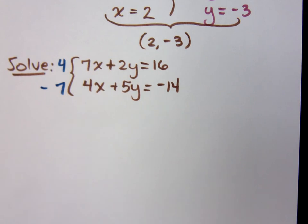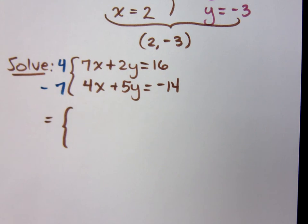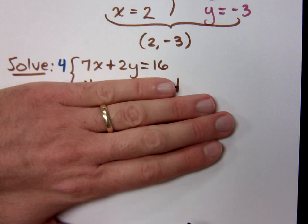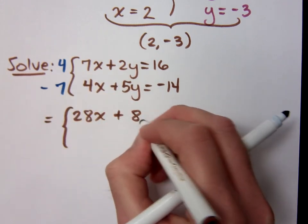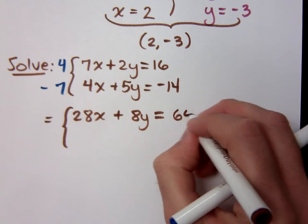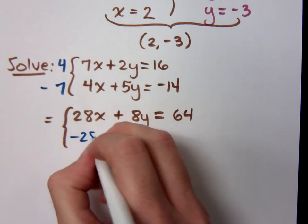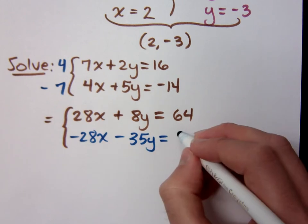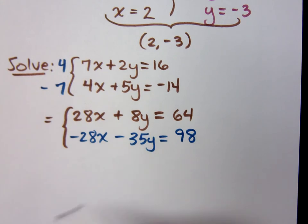Let's make this guy negative. Now, when I do that, let's see what my system becomes. This first equation, if I multiply all of this by the 4, what do you get? 28X plus 8Y equals 64. Multiply the other equation by negative 7. What do you get? Negative 28X minus 35Y equals positive 98. Look what you have set up here. These X's cancel.